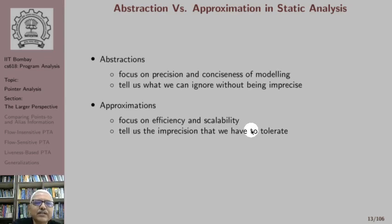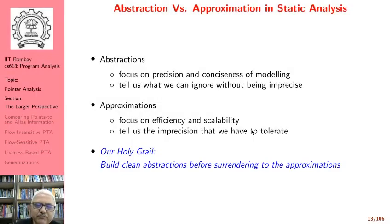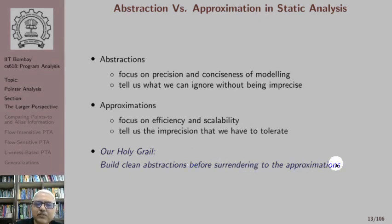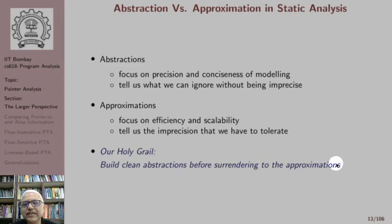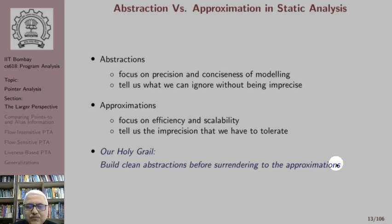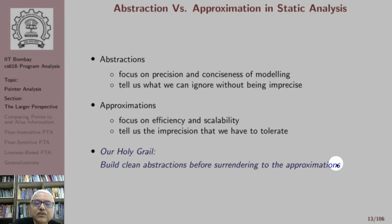I would like to say that we should first build clean abstractions before surrendering to the approximations. Since we are dealing with undecidable problems, we will have to bring in approximations anyway. But should we start with the approximations and get imprecise information, or should we try to build clean abstractions first? If we build clean abstractions, I call it the science view, and if we do not worry about abstractions but start building something workable using approximations, I call it the engineering view. Of course, this is a personal opinion and opinions differ on this matter.